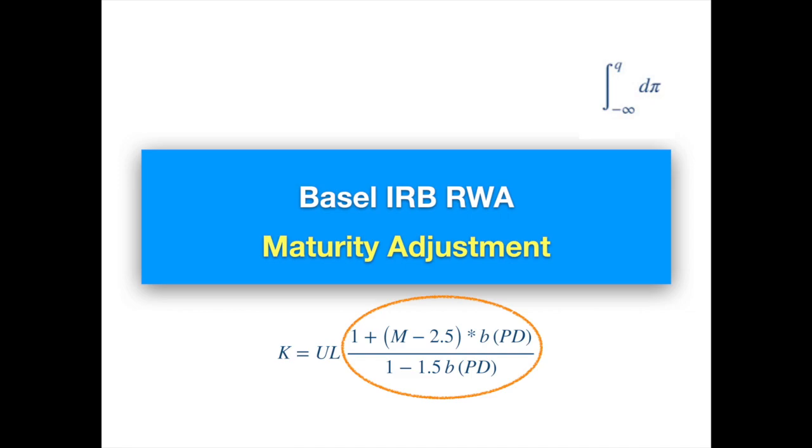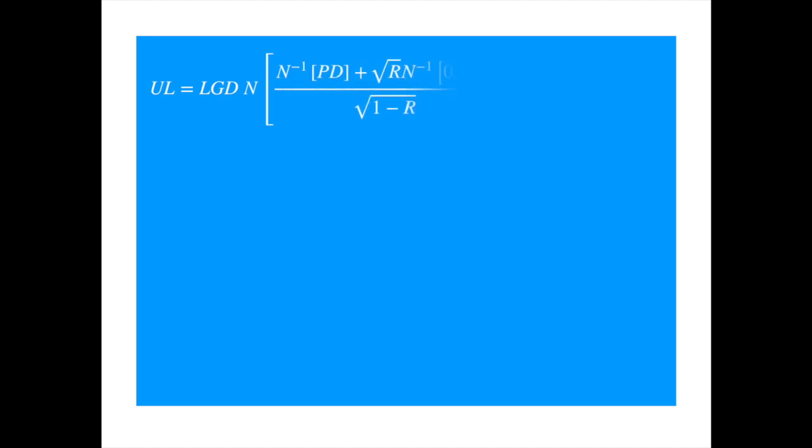We recap how this formula fits into the IRB capital requirements by reproducing the IRB formula. The IRB formula is used for calculating capital requirements for credit risk. We were introduced to the unexpected loss in the previous video.